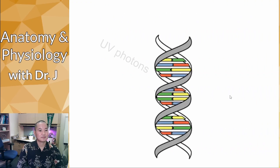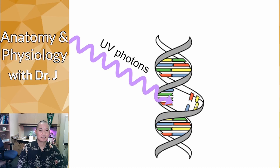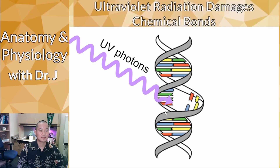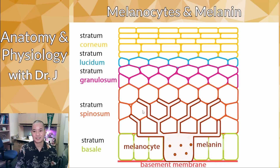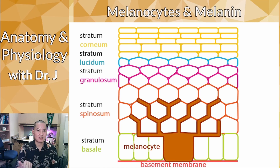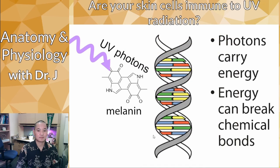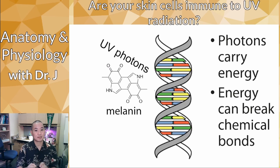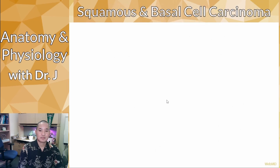We did talk about one skin pathology: ultraviolet light has energy, and when it encounters chemicals it can break bonds between atoms. We covered this when we talked about tanning and why it's important to wear sunscreen. Melanocytes produce melanin, which is a chemical with bonds, and melanin helps absorb energy from UV light to protect your DNA, collagen, and elastin from UV damage.